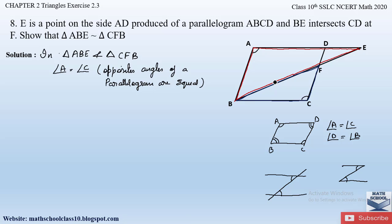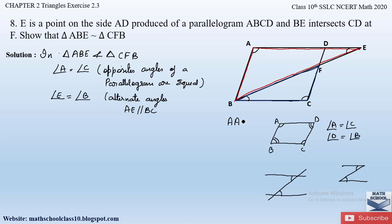In our figure, from A to E to B to C we have a Z-formation. Therefore, angle E equals angle B, because they are alternate angles — since AE is parallel to BC. So two angles of triangles ABE and CFB are equal. By the Angle-Angle similarity criteria, we can conclude that triangle ABE is similar to triangle CFB.